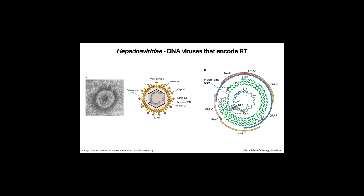Briefly, hepadnaviruses are DNA viruses that encode reverse transcriptase. Retroviruses have RNA genomes, but hepadnaviruses have DNA genomes and encode reverse transcriptase. These are enveloped viruses that cause hepatitis and liver cancer globally — very serious. If you're working in healthcare, you should absolutely be vaccinated against hepatitis B. The virus is enveloped with glycoproteins and inside is an icosahedral capsid containing partially double-stranded DNA — this is group VII of Baltimore. It has a large gap of single-stranded DNA, a piece of RNA, and a protein attached. That protein is reverse transcriptase — it's stuck there because it didn't finish making the second strand.